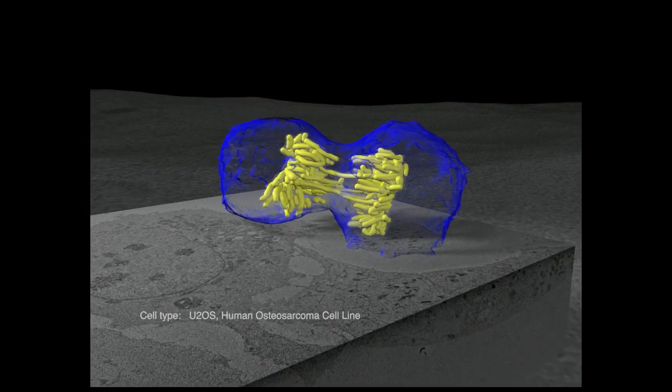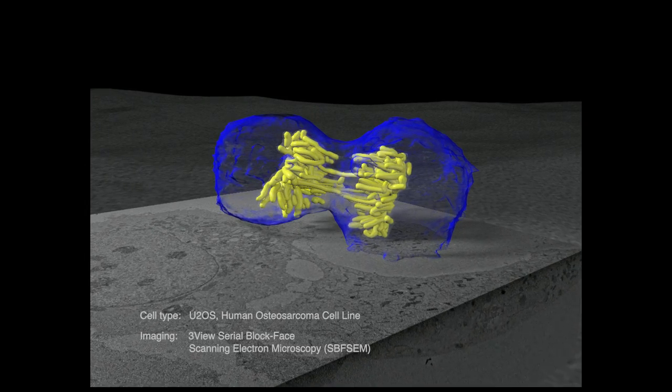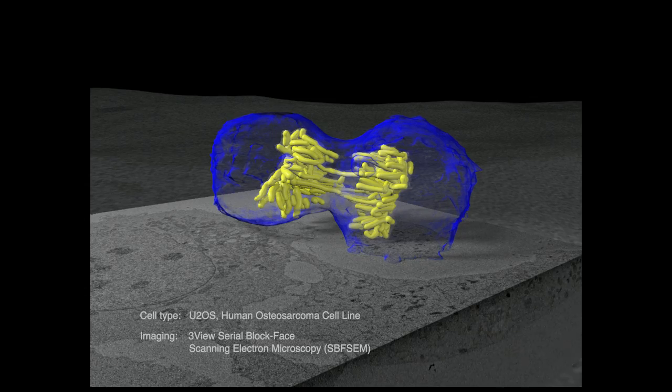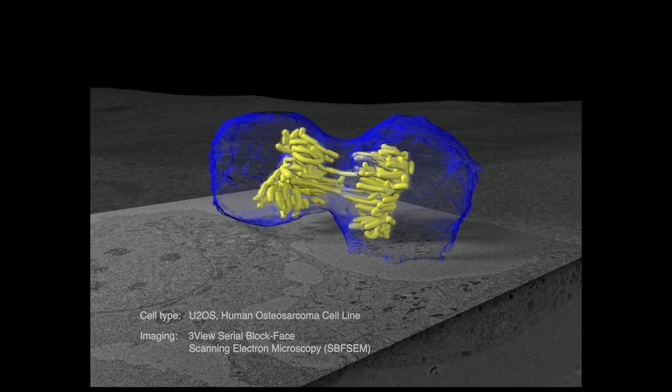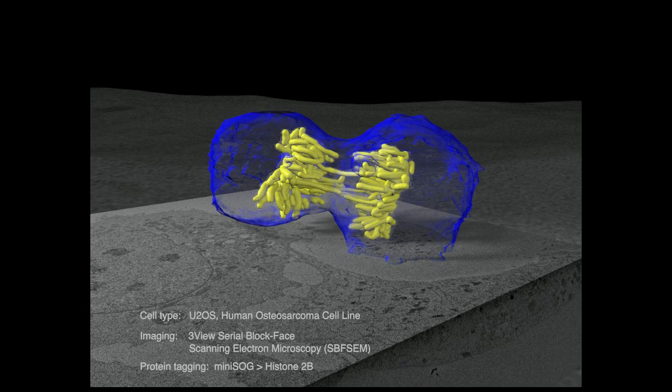The cell you are looking at is a cancerous human cell line imaged using serial block-face scanning electron microscopy with the GATAN 3View system to cut successive slices.